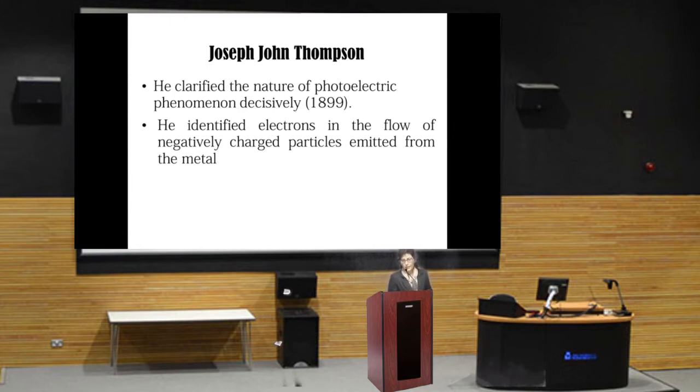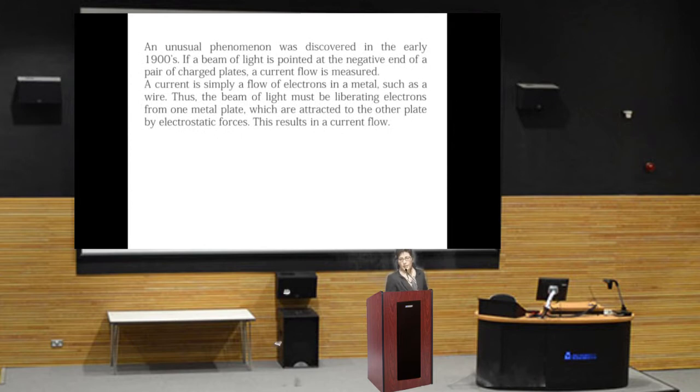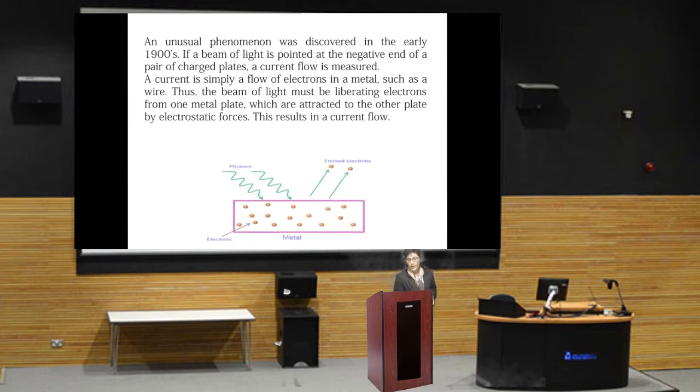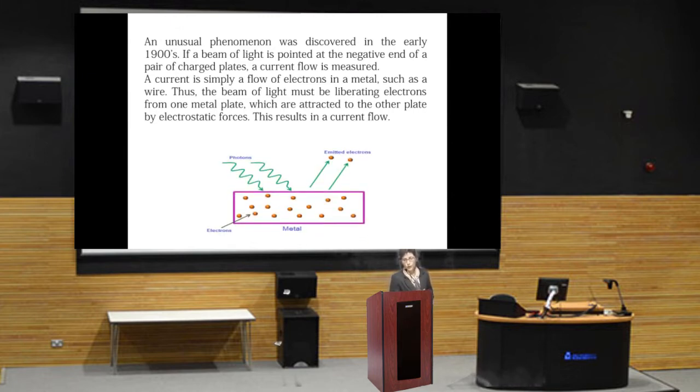An unusual phenomenon was discovered in the early 1900s. If a beam of light is pointed at the negative end of a pair of charged plates, a current flow is detected. A current is simply a flow of electrons in a metal, such as a wire. Thus, the beam of light must be liberating electrons from one metal plate which are attracted to the other plate by electrostatic force. This results in a current flow.